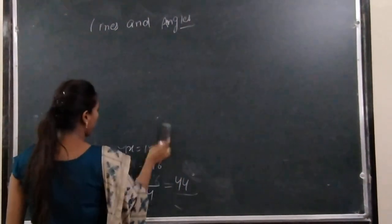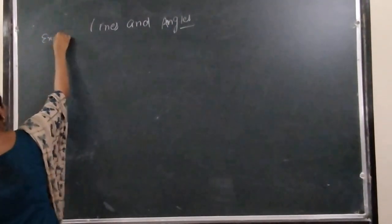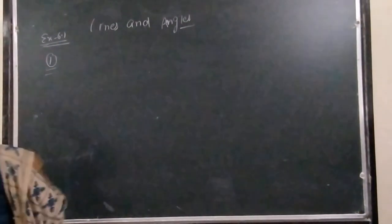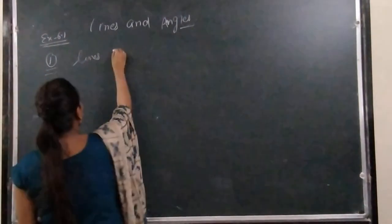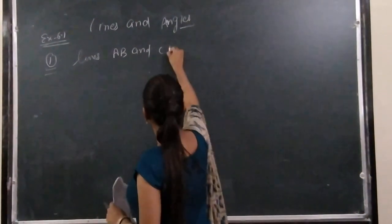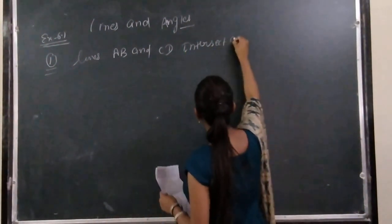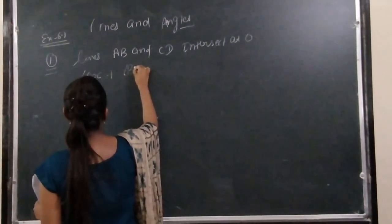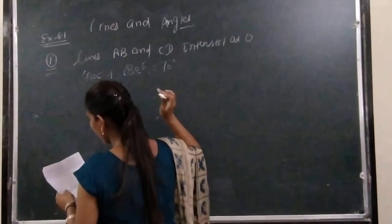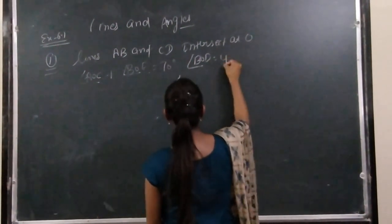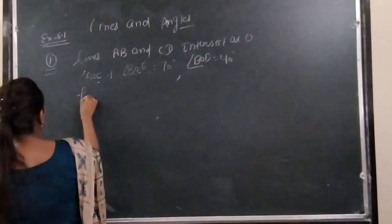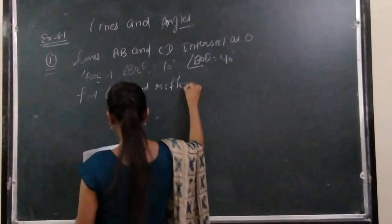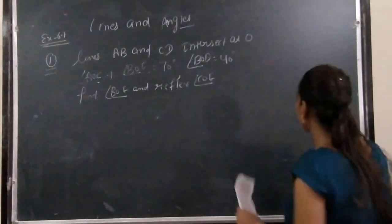Now we will solve Exercise 6.1, question number 1. Lines AB and CD intersect at O. The statement given is: angle AOC plus angle BOE equals 70 degrees, and angle BOD equals 40 degrees. You have to find angle BOE and the reflex of angle COE. A diagram is also given.